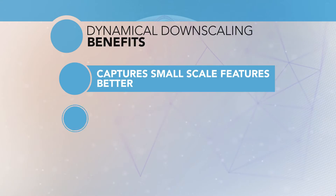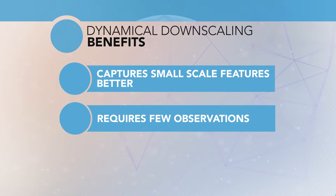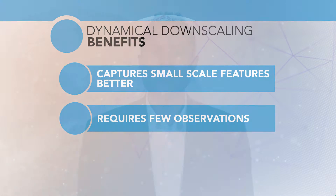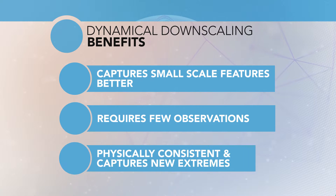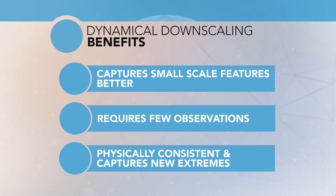Second, dynamical downscaling allows us to produce high-resolution projections from a climate model where there may be few or no observations, although this can be a downside as well, since there may be limited opportunities for us to verify the model. Third, unlike statistical downscaling techniques, regional climate models are based on physical and dynamical principles of the climate system, which means that their results are physically consistent, and new extremes in the climate system can result from the mathematical equations.